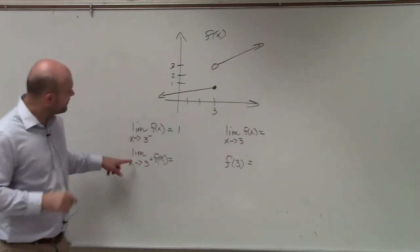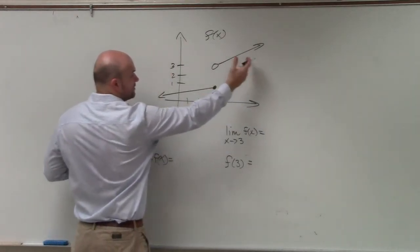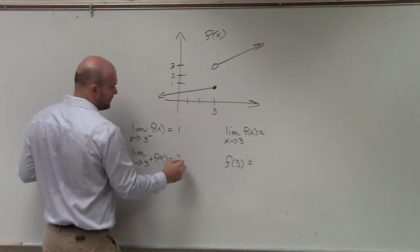When we approach the limit from 3 from the positive side, we're going to the right of 3. And we're going from right over to left. And we can see that it approaches the f of x value of 3.